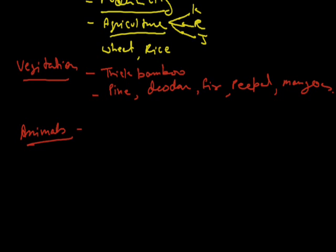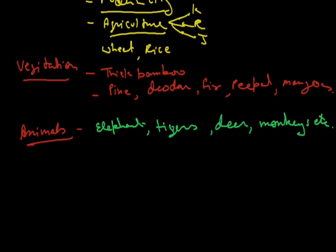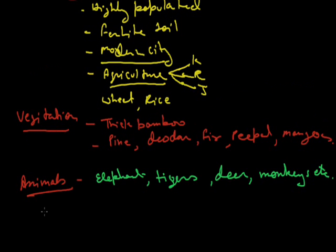When we come to animals, elephants, tigers, deer, and monkeys are commonly found in this region. So this is how we see the sub-tropical regions of India with rich agricultural areas.